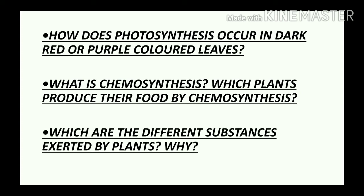In colored plants, there are carotenoids, xanthophyll and anthocyanins. These are plant pigments other than chlorophyll. These plants also have chlorophyll beside these color pigments. However, due to extra color pigments, these plants appear to be of that color and not green. Photosynthesis in such plants also occurs due to chlorophyll. The other pigments absorb some radiations and pass it on to the chlorophyll molecules. In this way, photosynthesis occurs in dark red or purple color leaves.